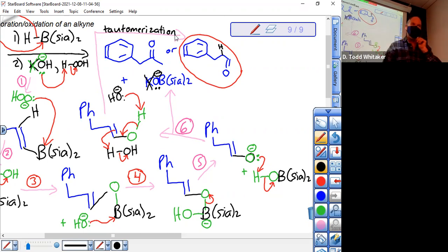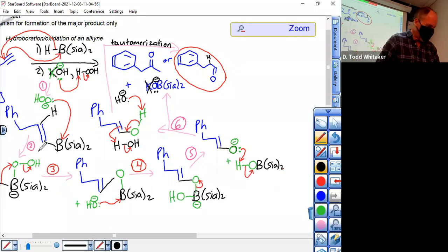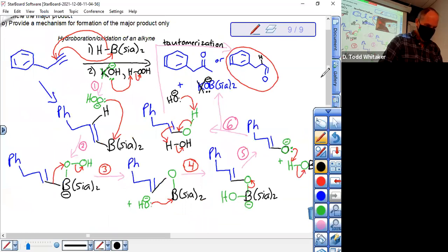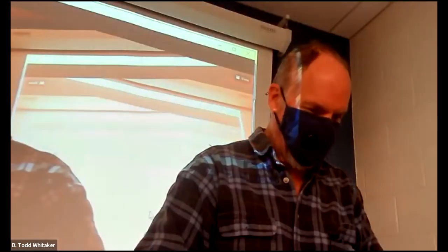Another reminder, you're going to see about 20 more tautomerizations in the next course. They're everywhere. So big picture here, you got the whole deal. And that's all we got. Thank you.